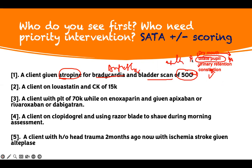Pupil dilation is more serious because if you have glaucoma, it will worsen it. Therefore, if you have a patient on atropine with a bladder scan of 500 mL, it's not something that makes me see that patient first among five patients. I know I'm worried about it, but I've got to check among these five patients who needs priority intervention. This should not be my first answer — this is an expected finding.